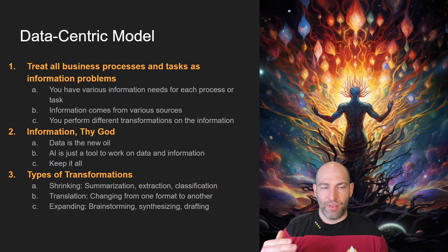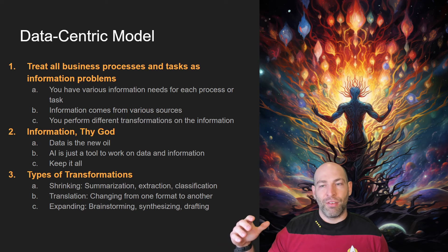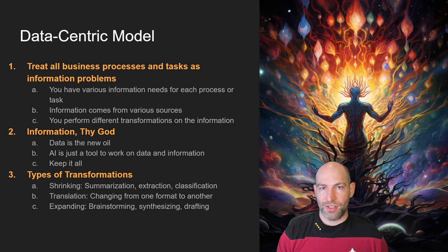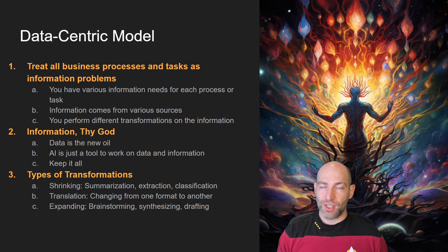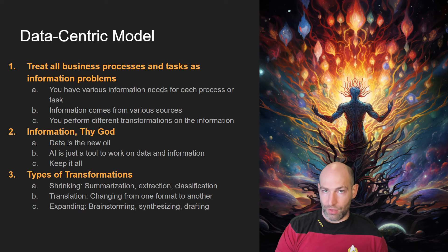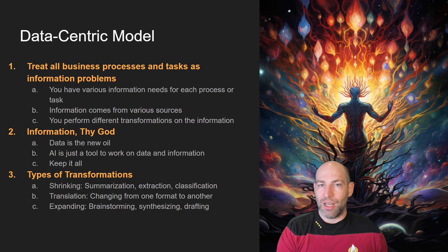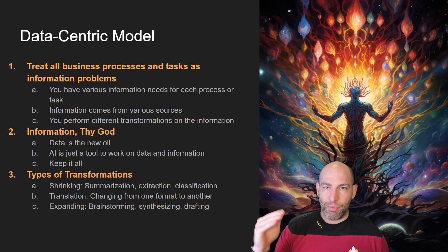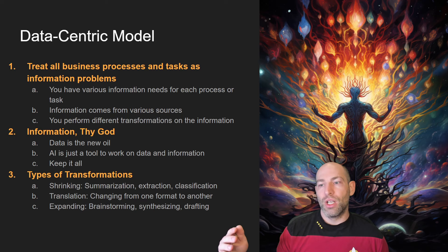Number two: information thy God. In fiction writing, we say 'thy God, the reader' — it's ultimately the reader who decides what succeeds. In this case, information and data is your God. Because everything in your business is an information problem, information is the actual thing you are serving to provide the goods and services that make your company viable. Goods and services are the economic output — the interface between your company and the world — but information is how you do that, and how you do it well. Data is the new oil. By adopting a data-centric approach to every process, protocol, and task, you'll have a better understanding of how generative AI can intersect and augment your business.